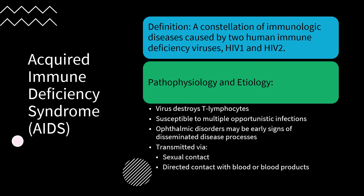Acquired immune deficiency syndrome, or AIDS, is a constellation of immunologic diseases caused by HIV-1 and HIV-2. The virus destroys T lymphocytes and impairs other immune cells, causing progressive and severe immunologic compromise. The person becomes susceptible to multiple viral, fungal, and parasitic opportunistic infections. The pathogens infect the eye in the later stages of illness, and ophthalmic disorders may be early signs of disseminated or multifocal disease.